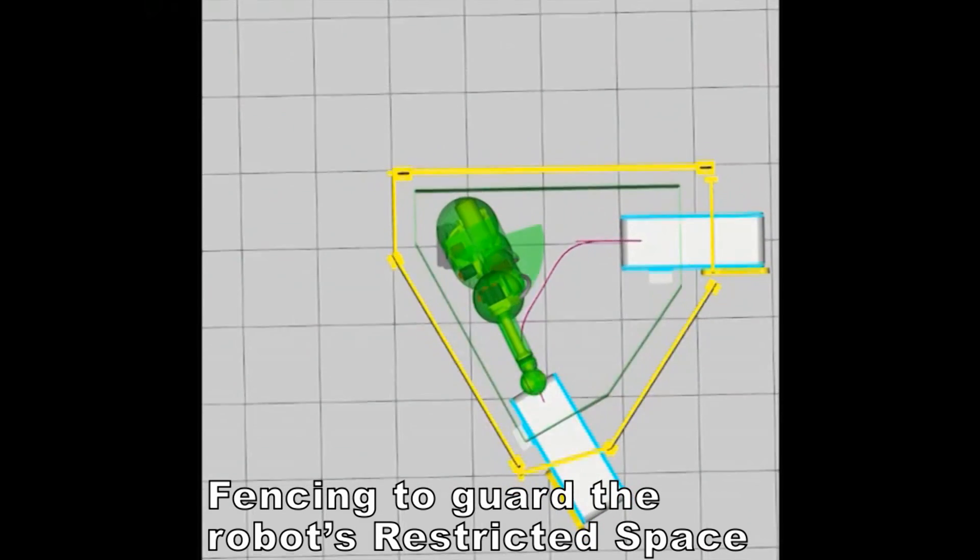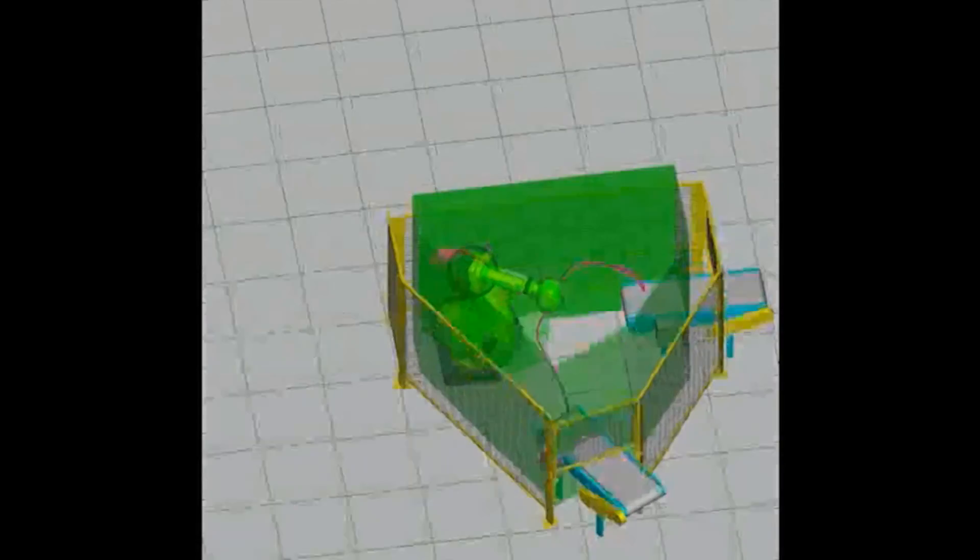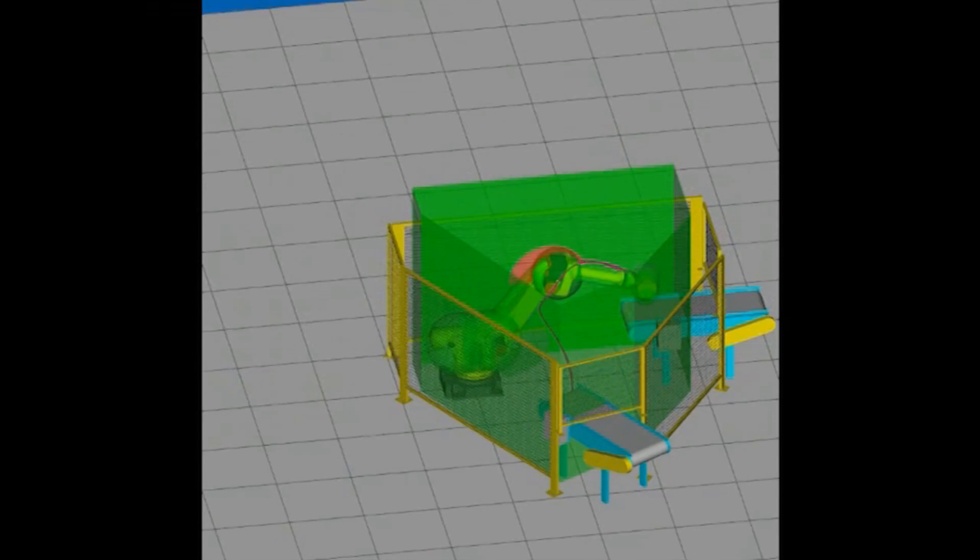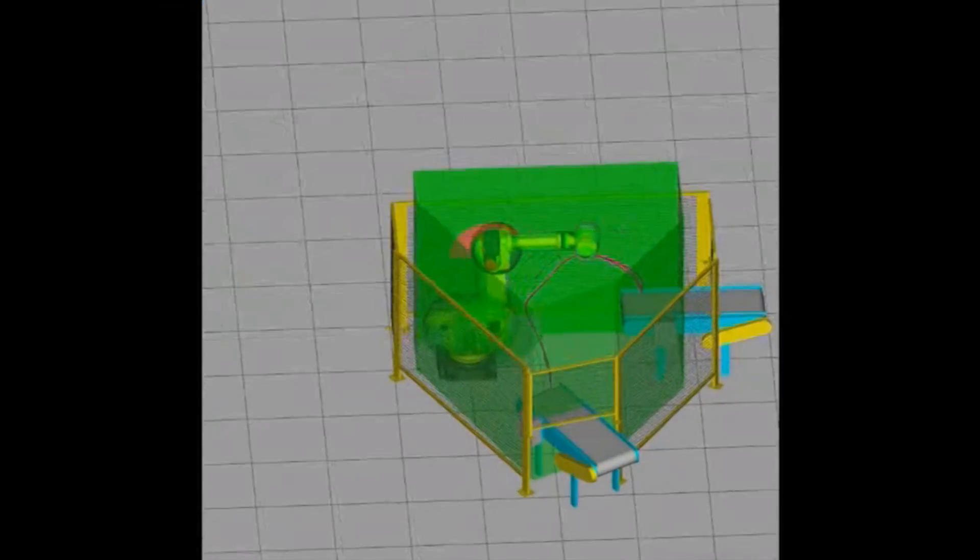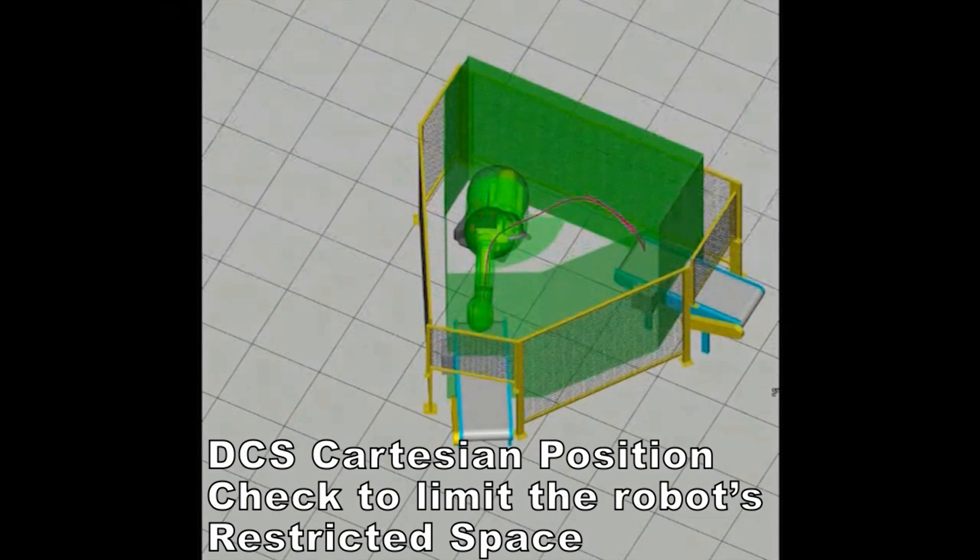With DCS Cartesian Zone and Joint Position Checking, the user can limit the manufacturing floor space and fence to the robot work area defined by the restricted space, thus cutting floor space and fencing costs.